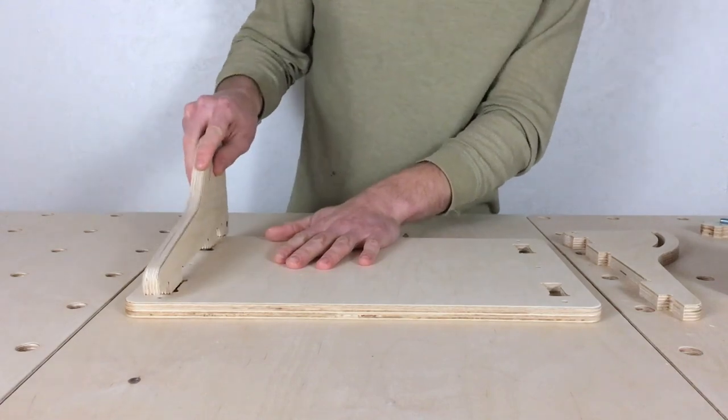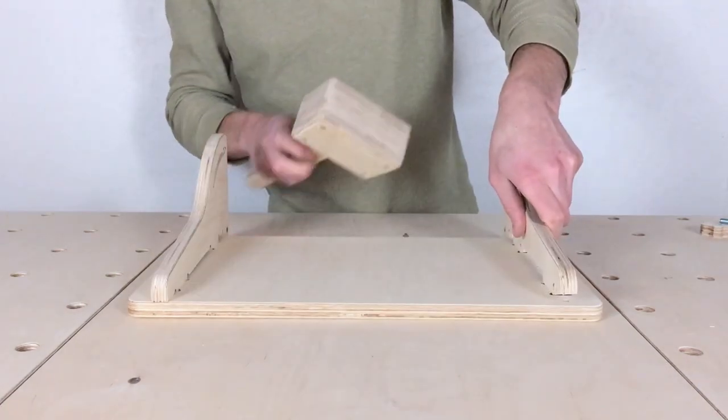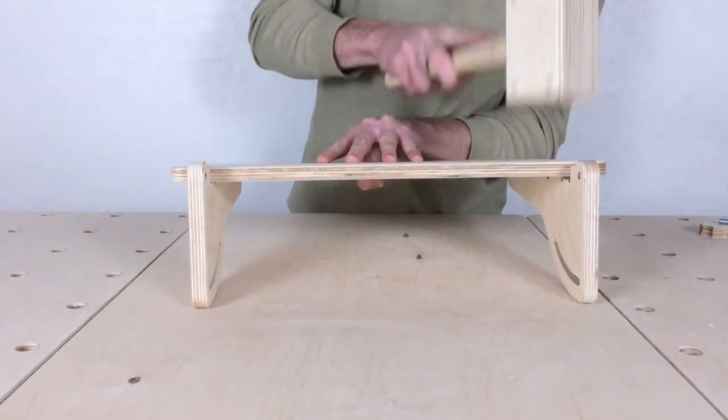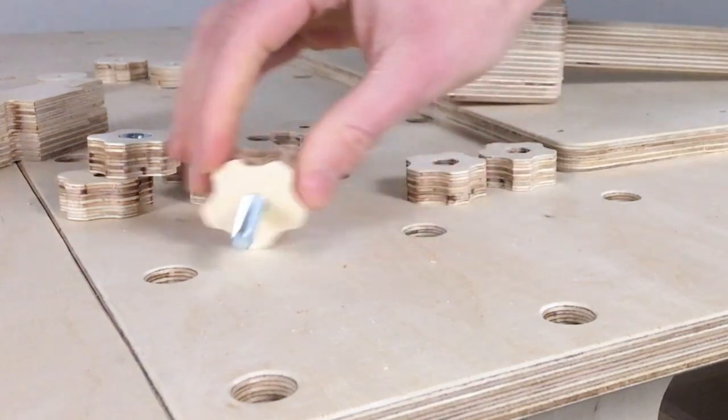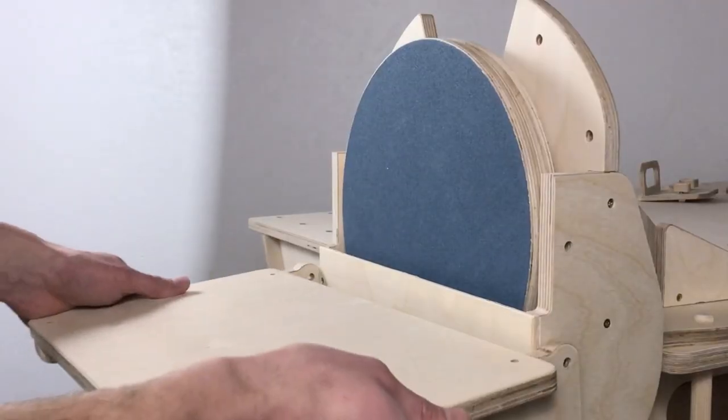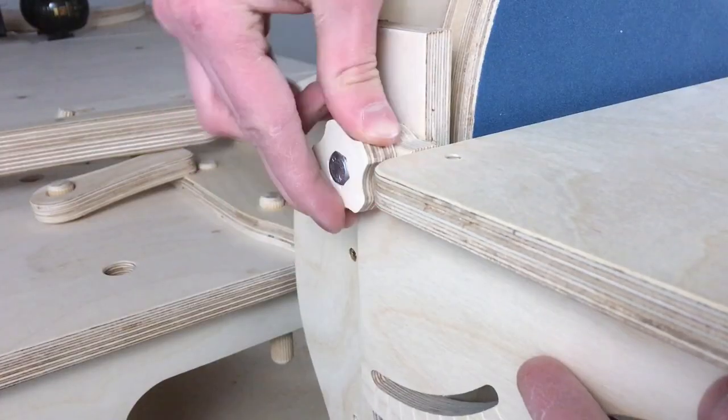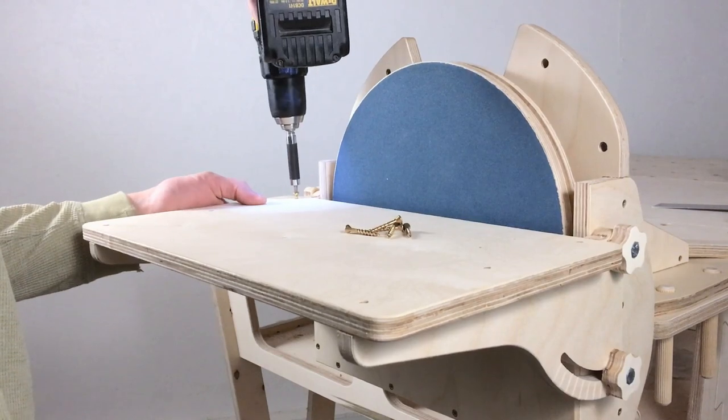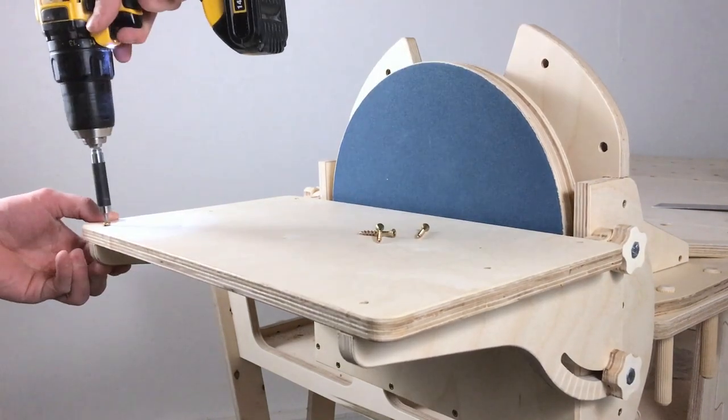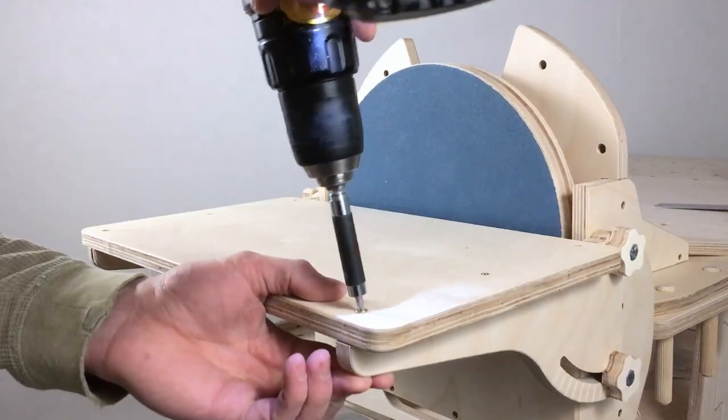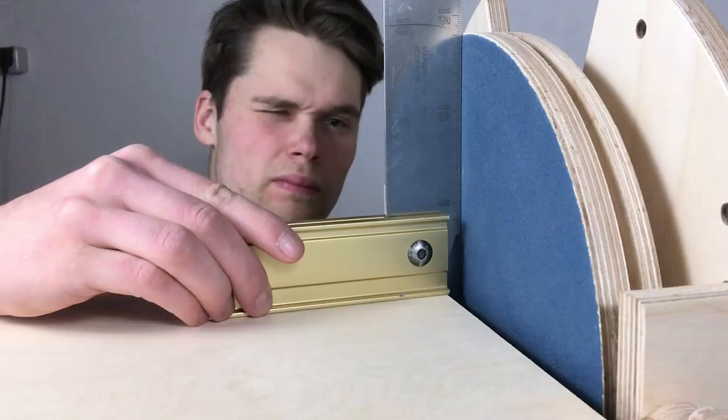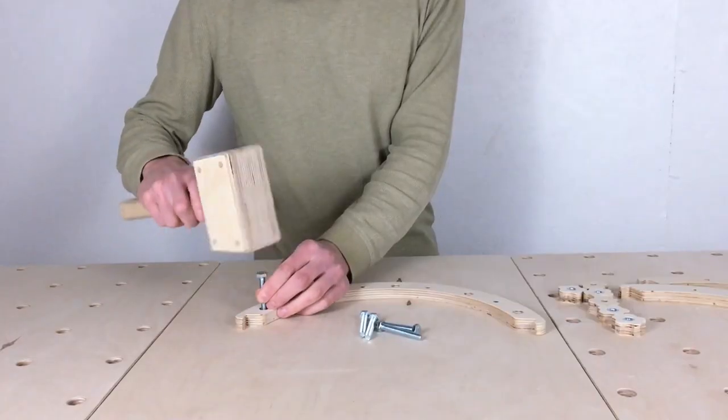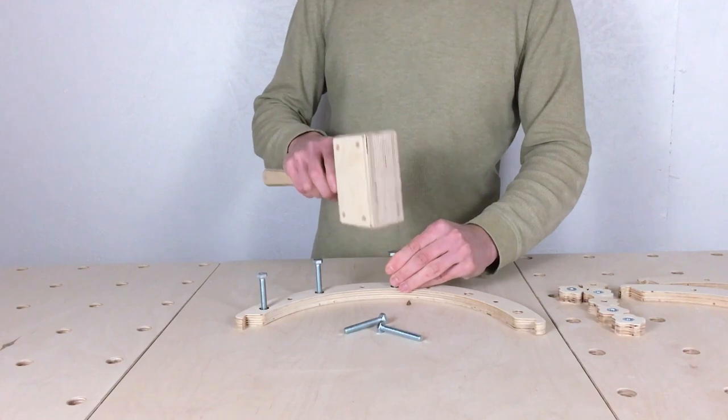Then it was time to assemble the work table. To attach it to the frame I made these star knob screws. When the table was in place I checked if the angle between the disc and the work surface is 90 degrees and it seemed perfect.